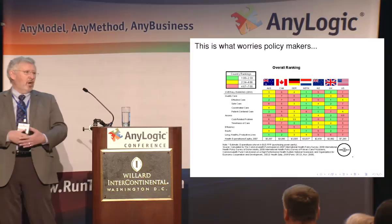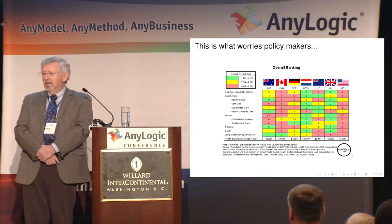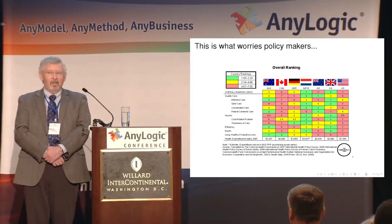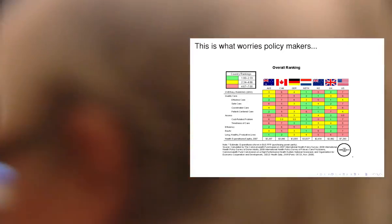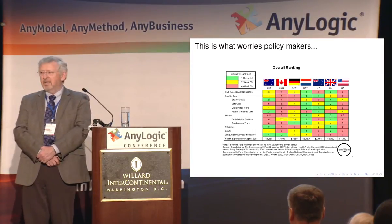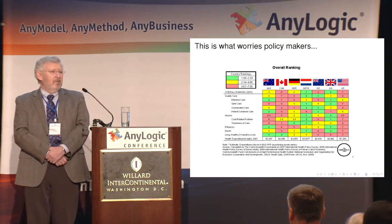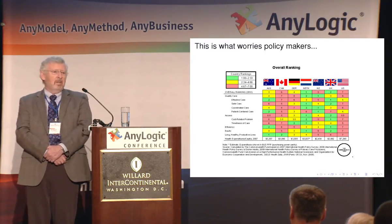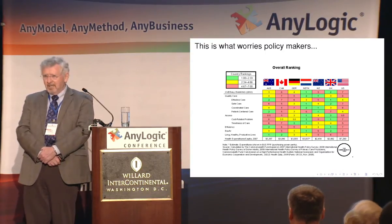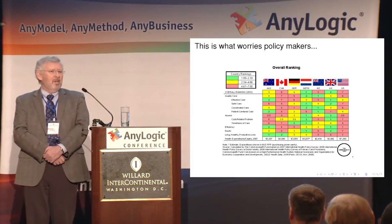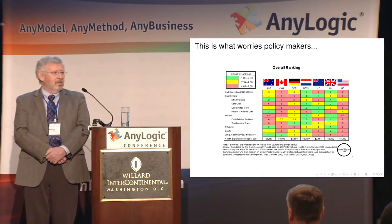This is where things normally start, especially in North America — people get very excited about this chart. You'll see there are seven countries compared on approximately eight or nine different categories. The two North American countries, Canada where I come from and the United States, bring up the rear at positions six and seven in terms of ranking by various criteria of how well the healthcare system works. And it usually motivates a big discussion about how you can reform it. Almost every developed country is trying to do something about its healthcare system.